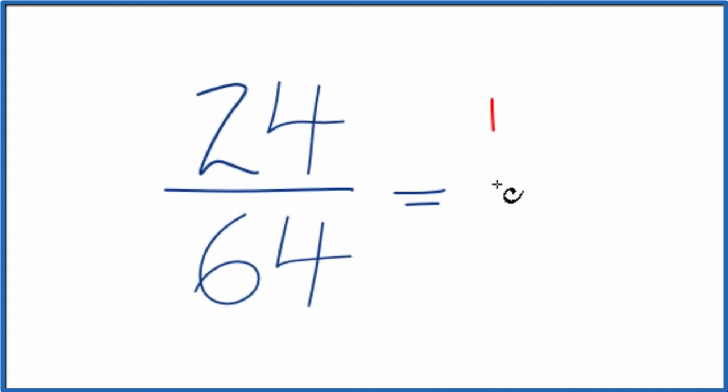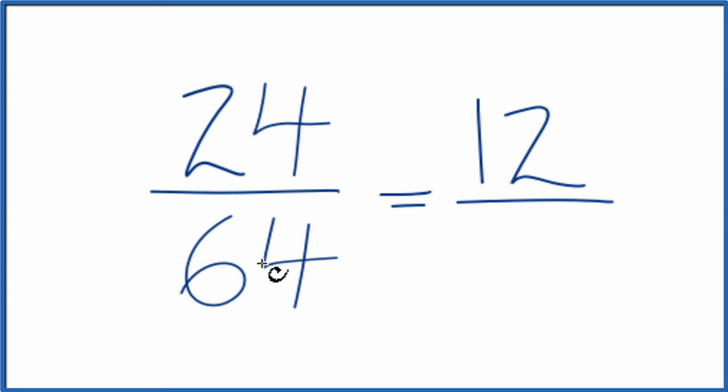24 divided by 2, that's 12, and then 64 divided by 2, that's 32. This is a lot easier for me to work with, because I know 4 will go into 12 and 32.